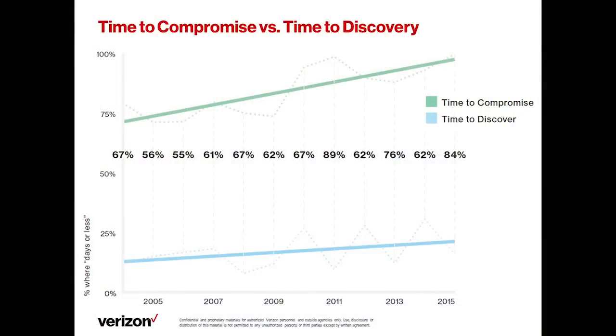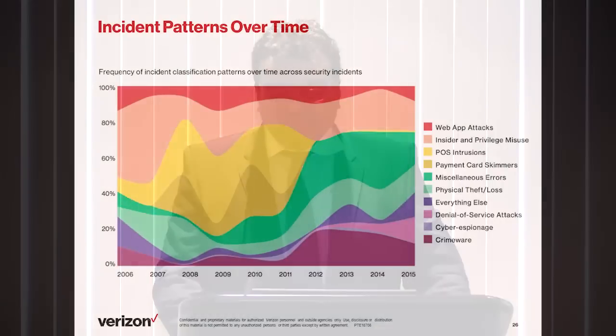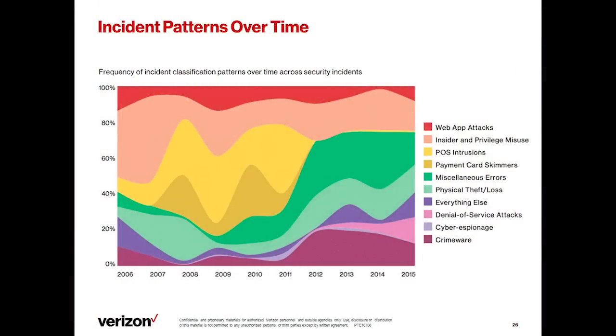The conclusion is that the detection deficit is the highest on record. The industry average is over 200 days before organizations identify that unwanted activity has been occurring across the enterprise. The detection deficit is 84%. Time to compromise versus time to discovery is a huge gap. The time it takes to carry out a compromise in public sector is seconds and minutes in 76% of the cases. We have further data on the Verizon booth which gives a fuller decomposition of this chart.